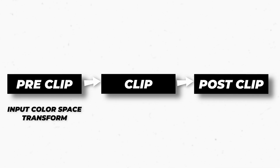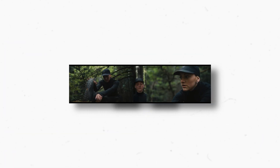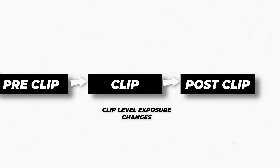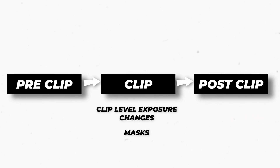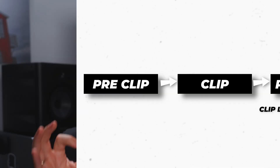The group pre-clip nodes will apply any grading you do to all of the clips in the group first. So this is probably where you would want to do an input color space transform — for example, I like to put a color space transform from whatever log image I'm using to DaVinci Wide Gamut in this spot. The next section is called clip, and this is actually only happening on the selected clip. So if you need to make specific clip-level exposure changes, masks, tracking, anything like that, this is where you want to make that happen. The clip grading is happening after the group pre-clip in the order of operations.